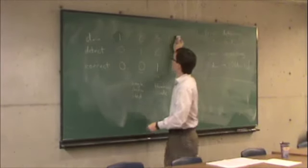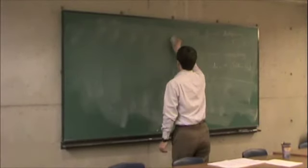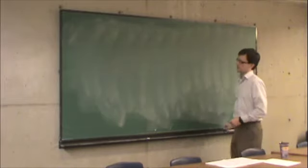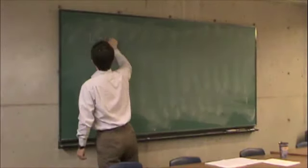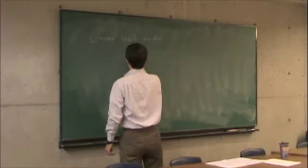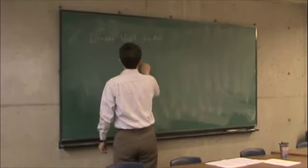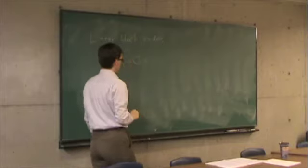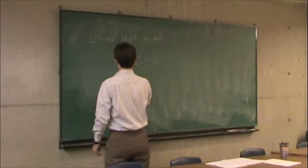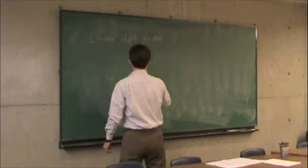Linear block codes have a generator matrix G. The way I generate a code word is I multiply G on the left by some message vector M and I get my code word. G is a K rows by N column binary matrix.